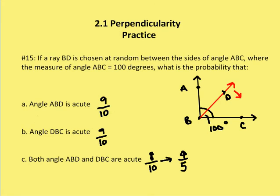In the second problem, we're given a diagram with angle ABC which equals 100 degrees, and we're asked to do some probability work. The probability work requires us to think about ray BD and its placement relative to the larger angle ABC. The question is: if angle ABC is 100 degrees and ray BD is chosen at random between the sides of angle ABC, what is the probability that angle ABD is acute?